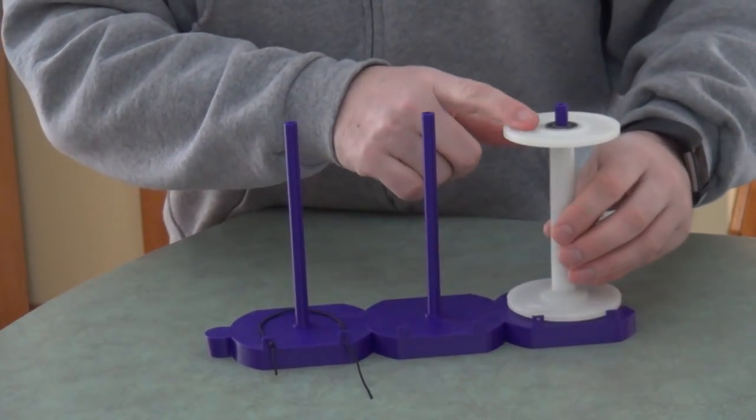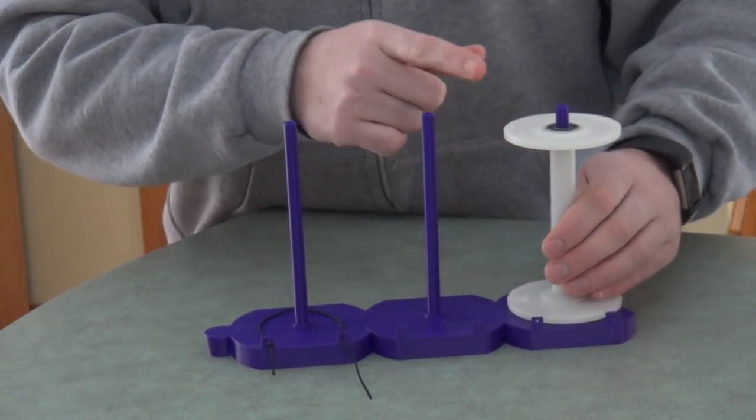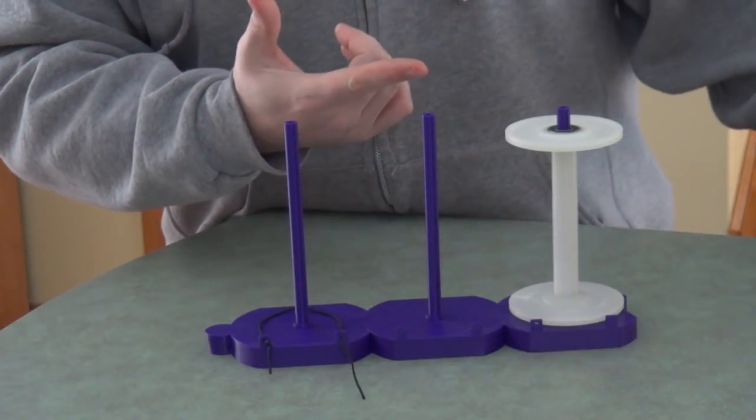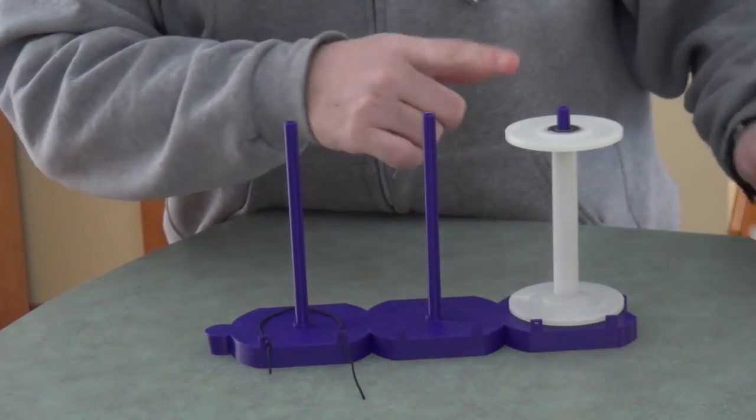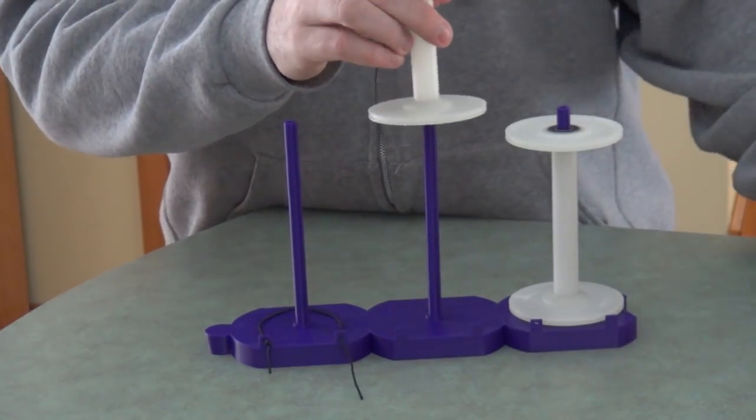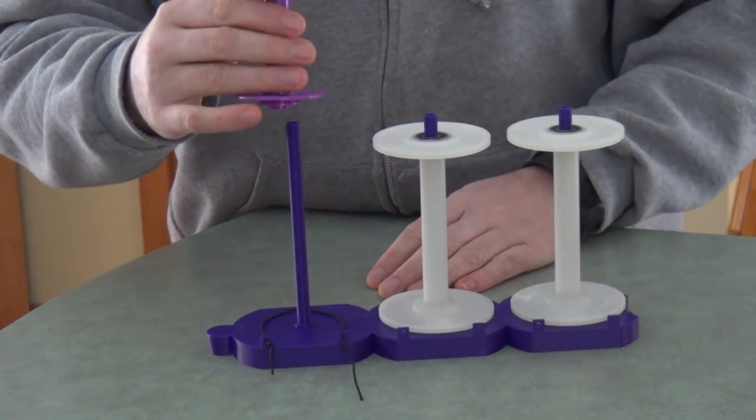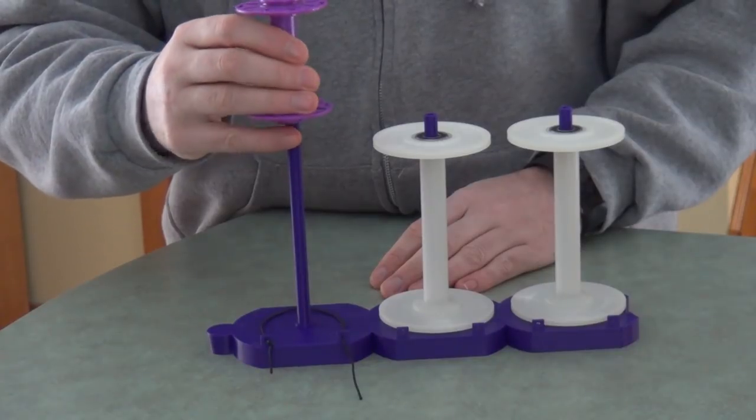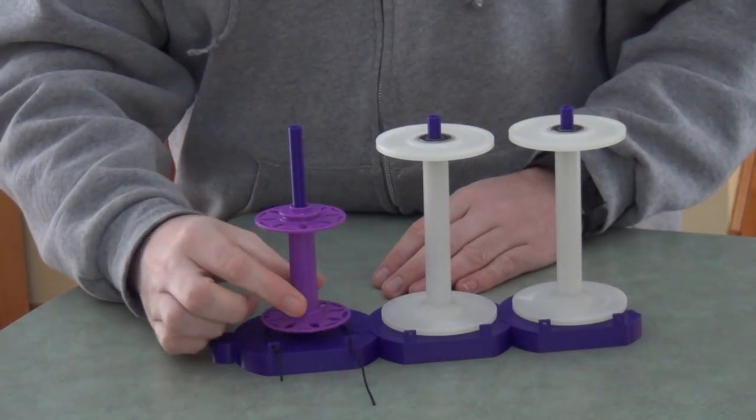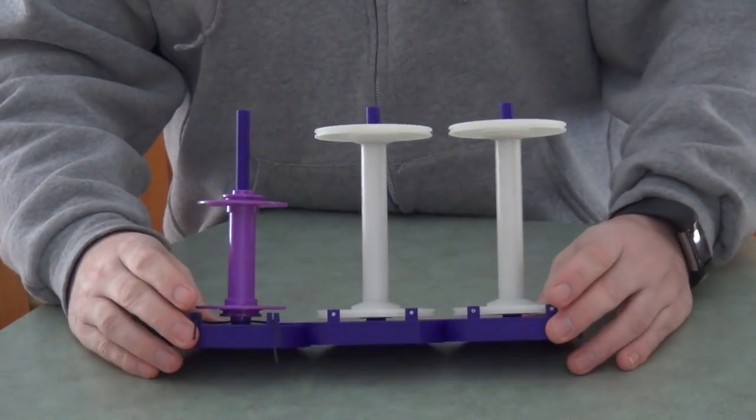This is an Electric Eel Wheel 5.2 bobbin. The Electric Eel Wheel 5 and 5.1 bobbins are the same size, so those would also work. And this is one of the new Electric Eel Wheel nano bobbins, and that also works. So that's pretty much it.